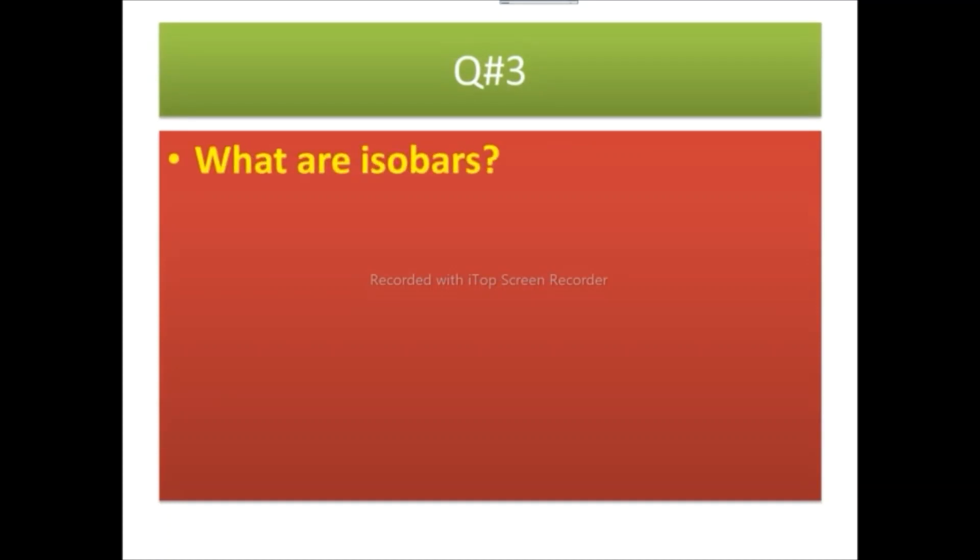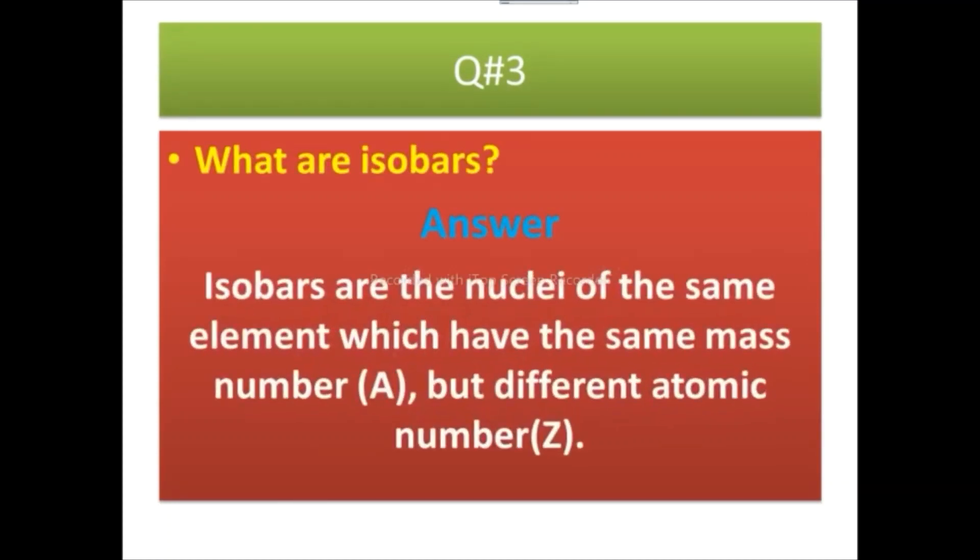Question number 3 is What are isobars? Isobars are the nuclei of the same element which have the same mass number but different atomic number.